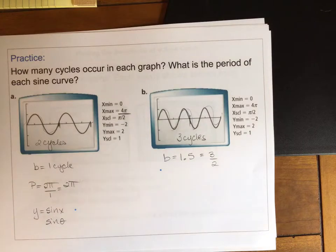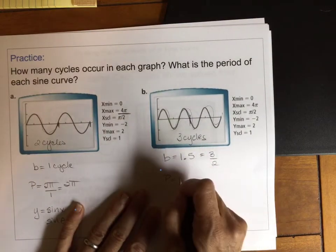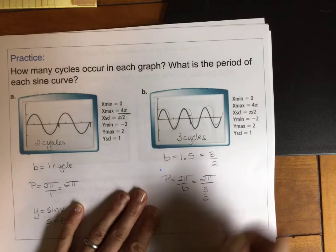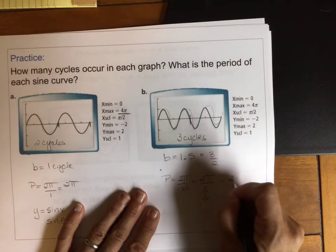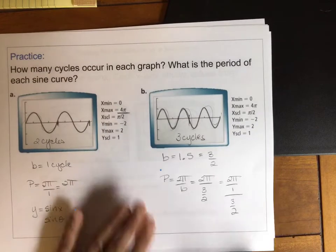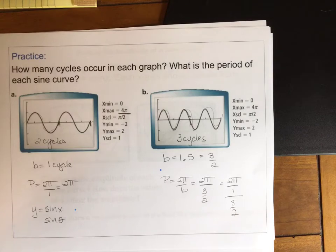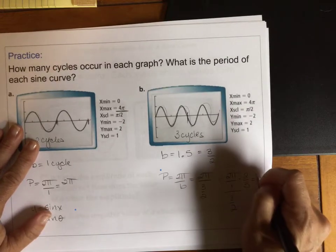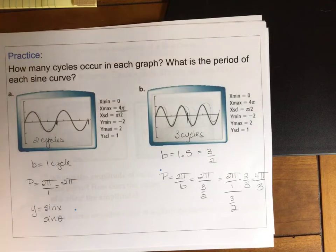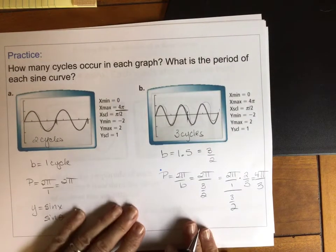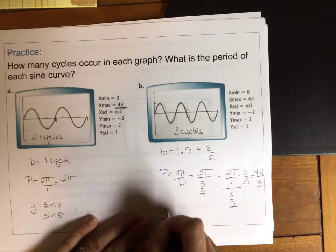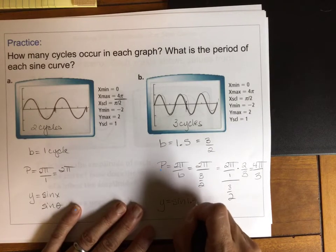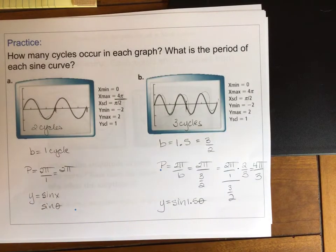So now when I go to find the period of this graph, period equals 2π over B. It's 2π divided by 3 halves. Remember, when we divide fractions, 2π over 1 divided by 3 halves, I really take the bottom fraction, I flip it, and then multiply. So flip it and multiply. And so the period on this graph is 4π over 3. So if I wanted to write my equation for this graph, my amplitude is still 1. It's a sine curve. And I could either put 1.5θ there or 3 halves θ.